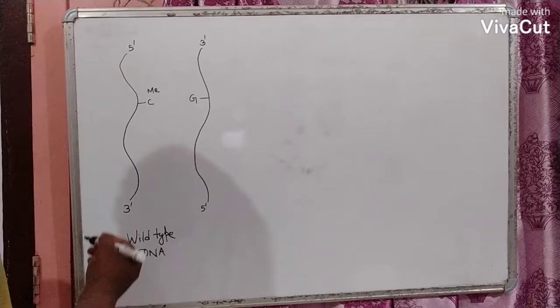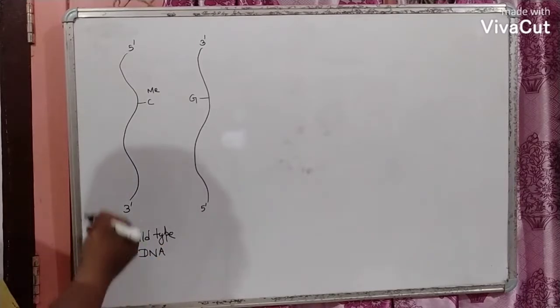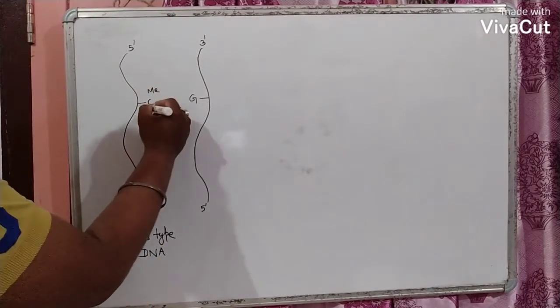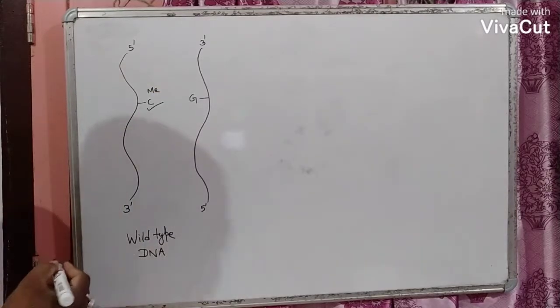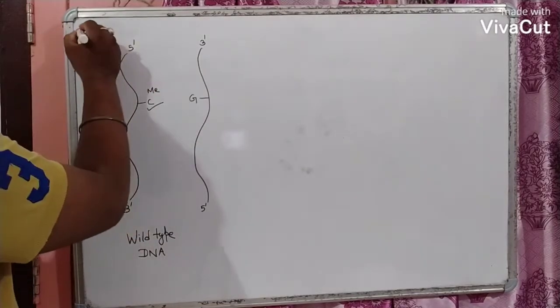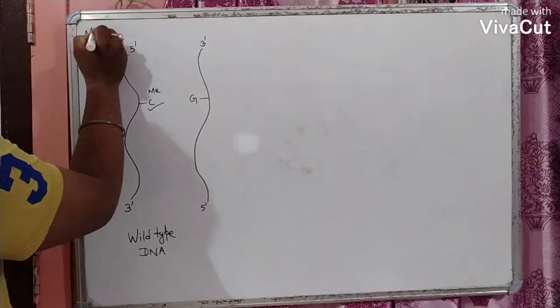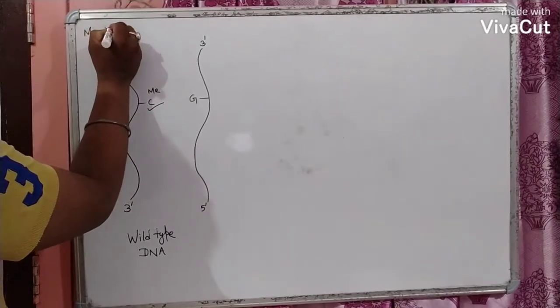Here it is, the wild type of DNA having a methylated cytosine. ME stands for methyl.